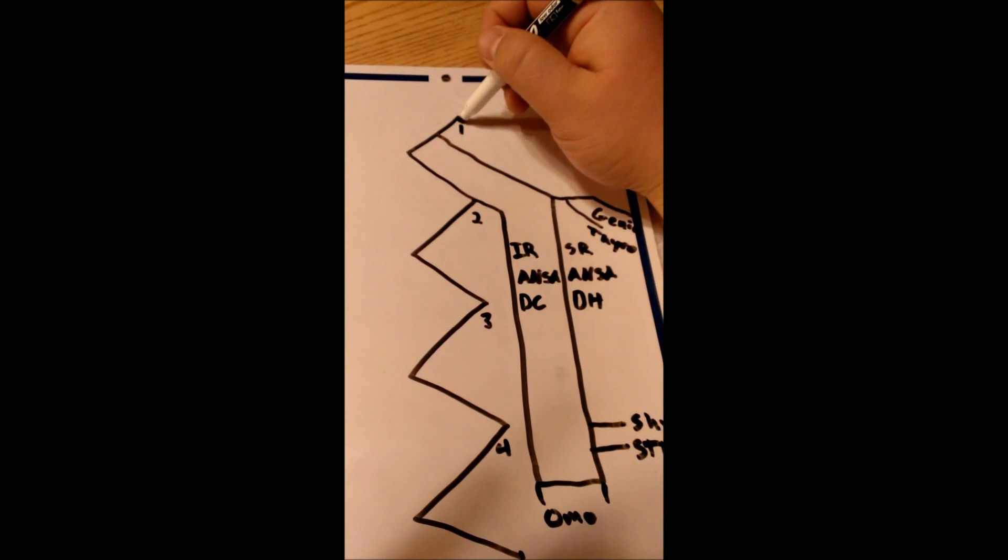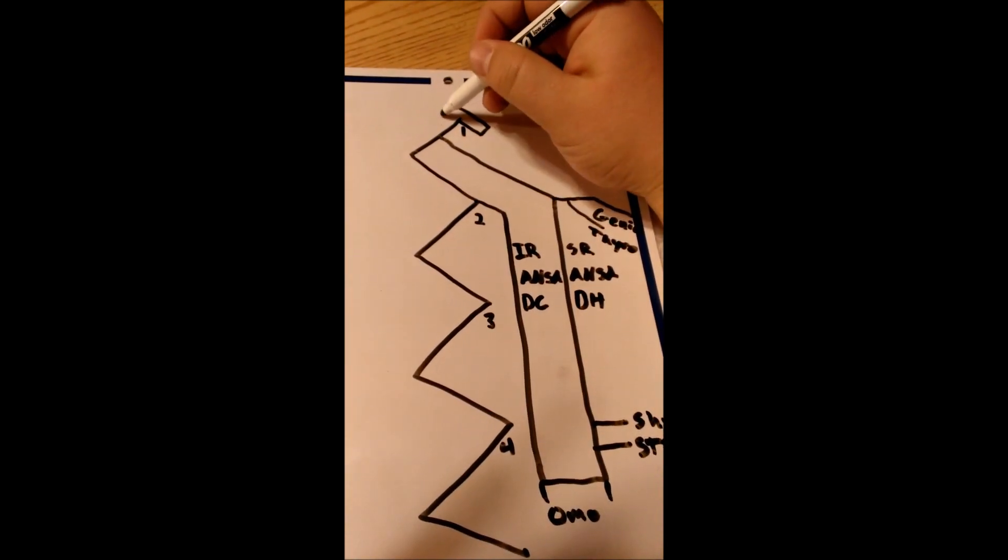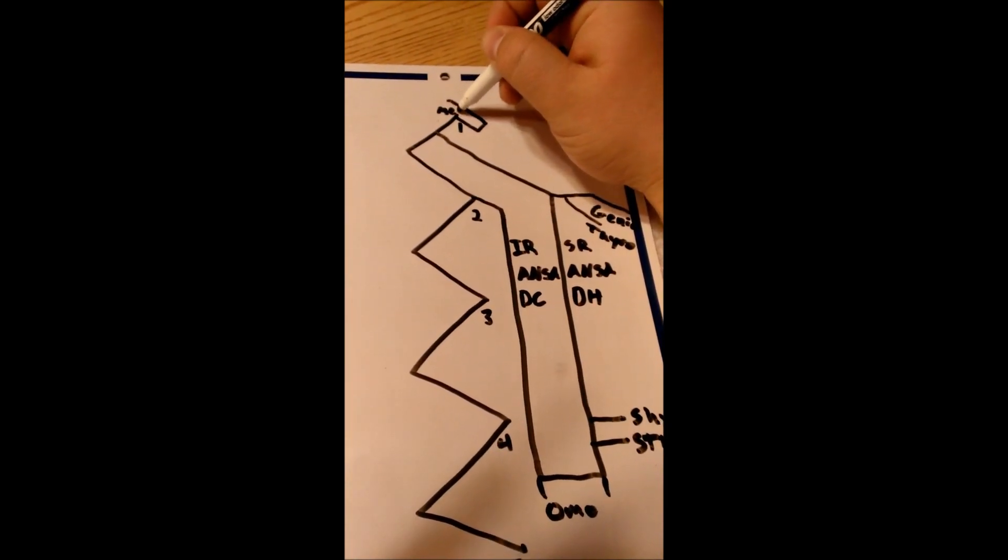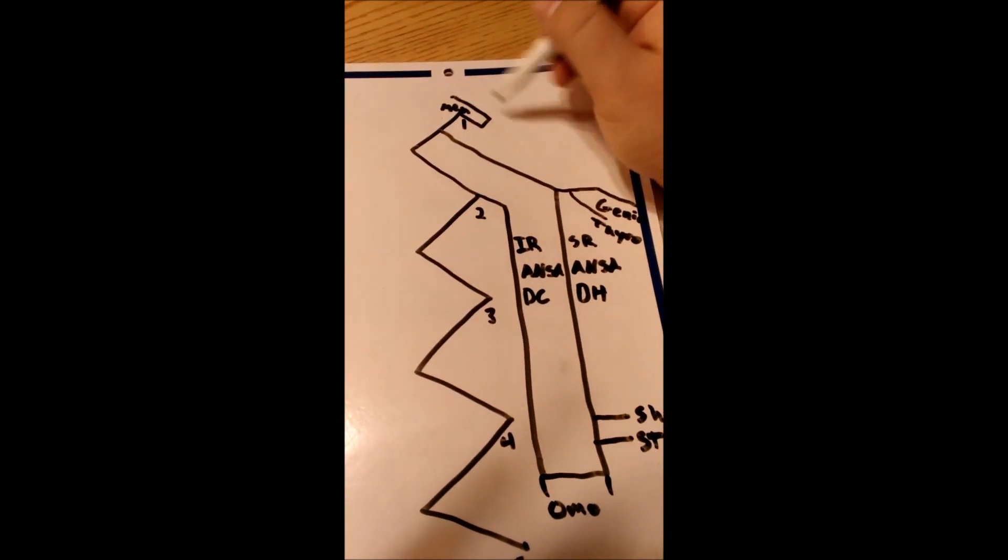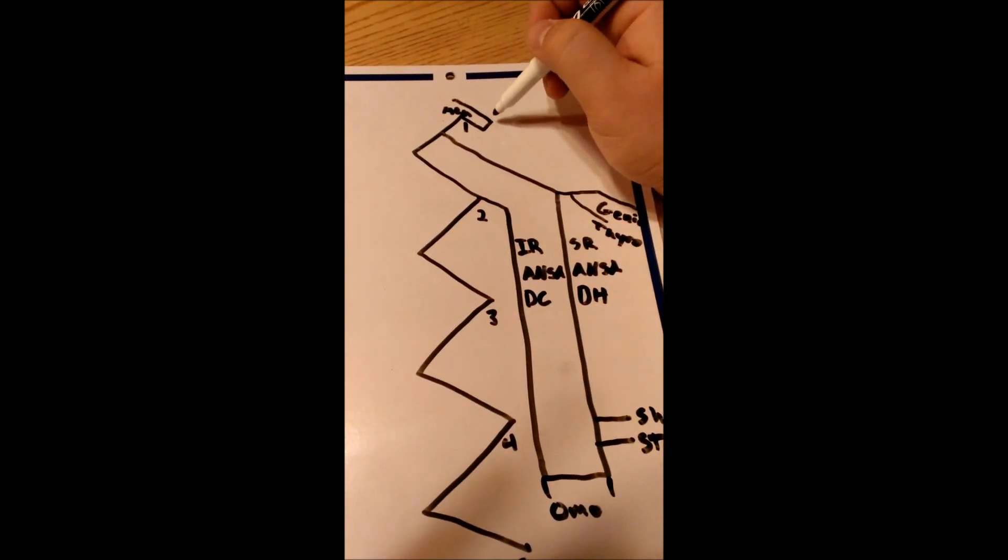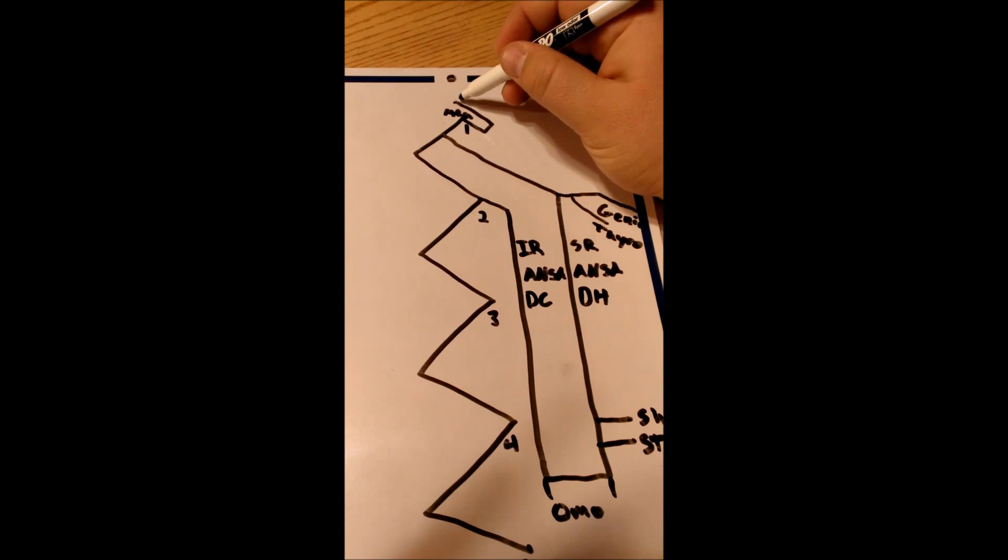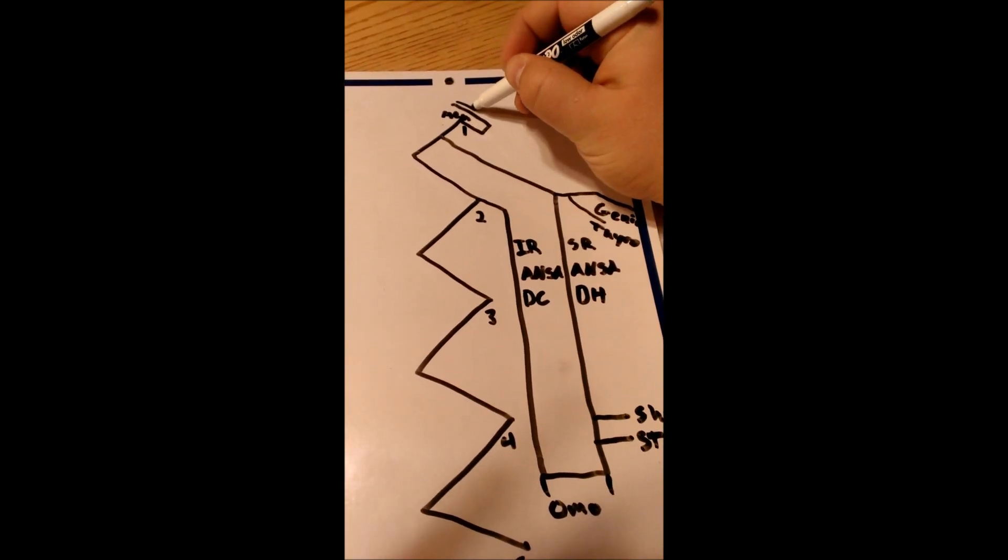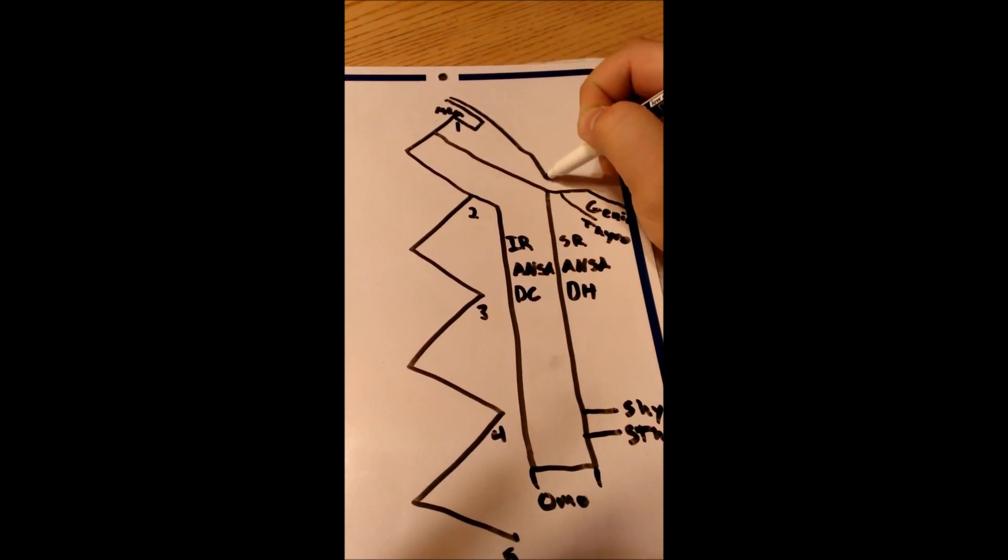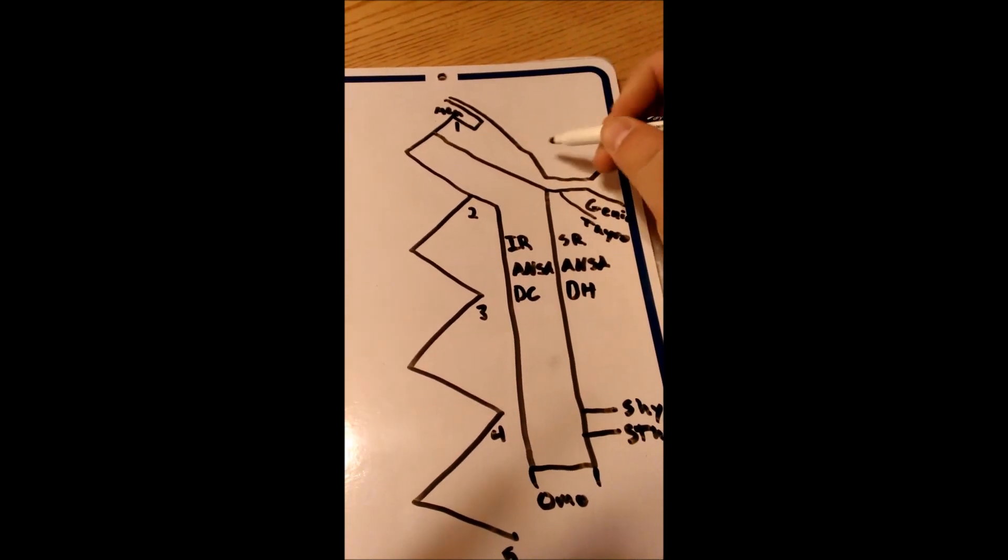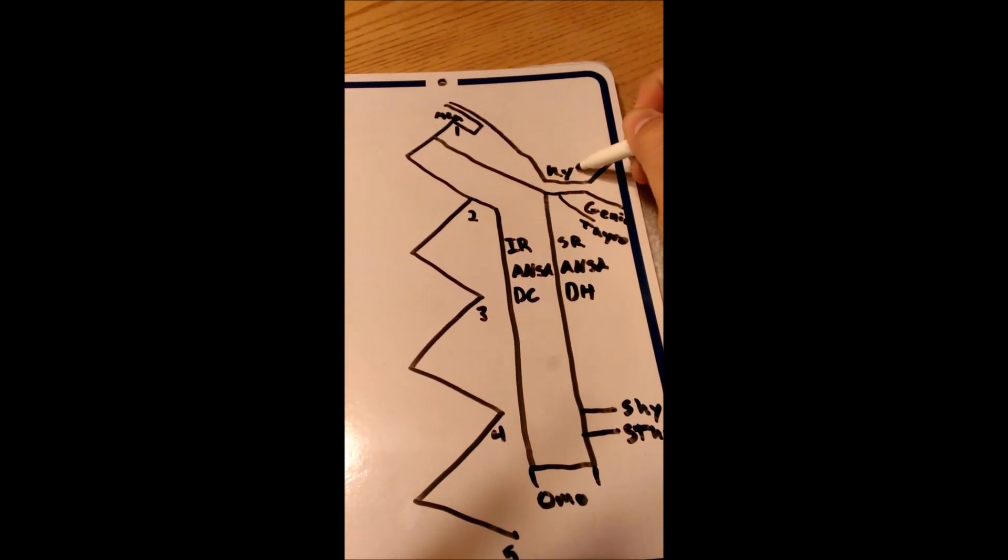And there's a small branch up here, the meningeal branch, and it actually ascends with the hypoglossal nerve up to the dura. So right now, might as well just draw the hypoglossal coming down. And I'll label this as the hypoglossal.